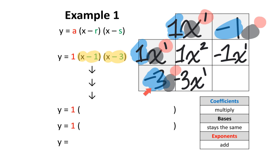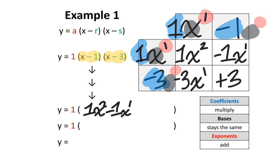Finally, we multiply negative 3 by negative 1. This is more straightforward — negative 3 multiplied by negative 1 gives you positive 3, since a negative times a negative gives a positive. At this point, we take these four terms and place them in the bracket: 1x squared, minus 1x to the power of 1, minus 3x to the power of 1, and positive 3.